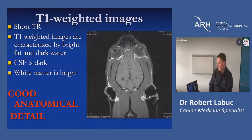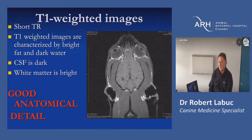T1 images use a fairly short repetition time and give quite bright fat content, but water content appears dark. When looking at the brain, CSF will be dark and white matter becomes quite bright. T1 images are excellent for producing good anatomical detail with extremely high definition. We get more information by giving contrast material which is gadolinium, a liquid metal. This works similarly to iodine in traditional x-ray contrast — it sits within blood vessels and will flood out wherever there is rupture of vasculature, giving good information about pathological areas.